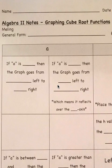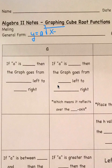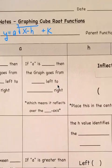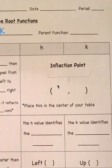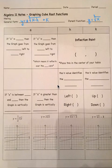The general form is y equals a times the cube root — which is the square root symbol with a three — of x minus h, plus k outside. Our parent function is just y equals the cube root of x. Taking the cube root means finding a number you multiply by itself three times.